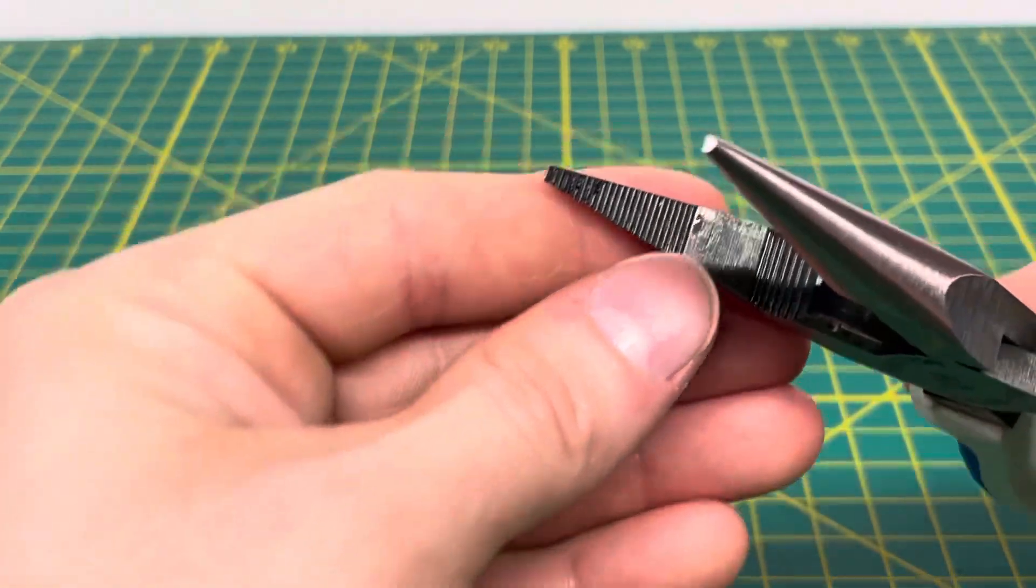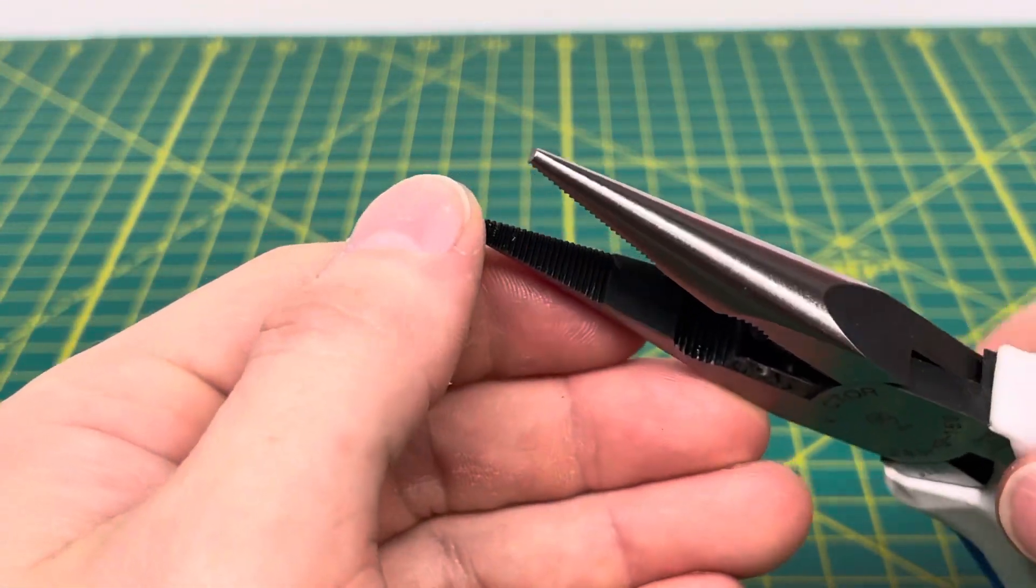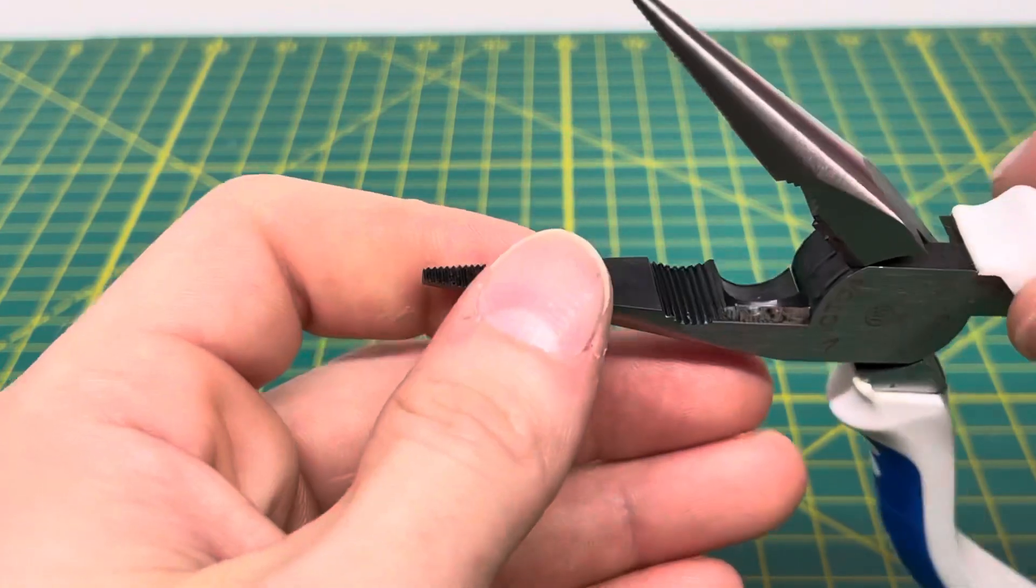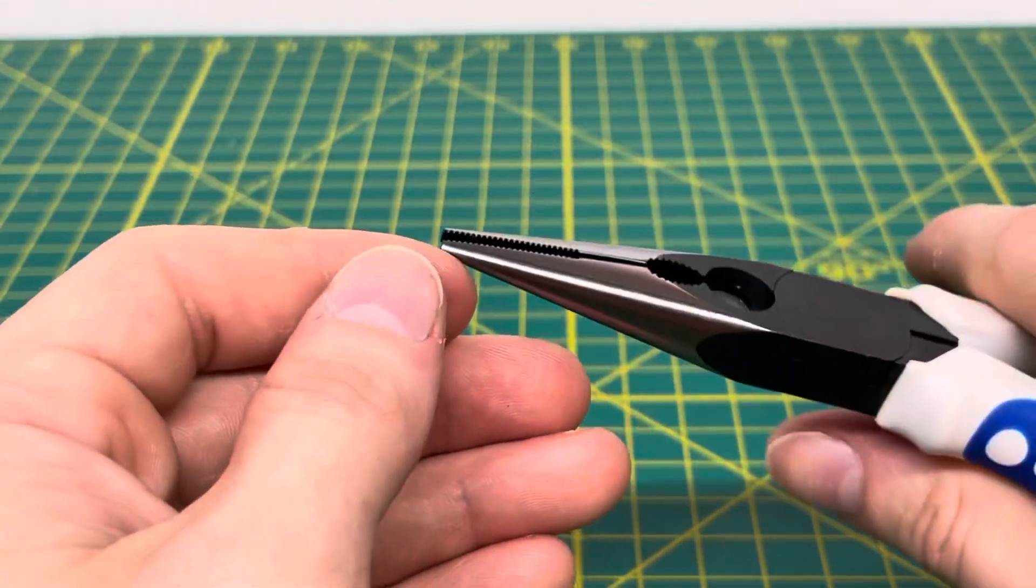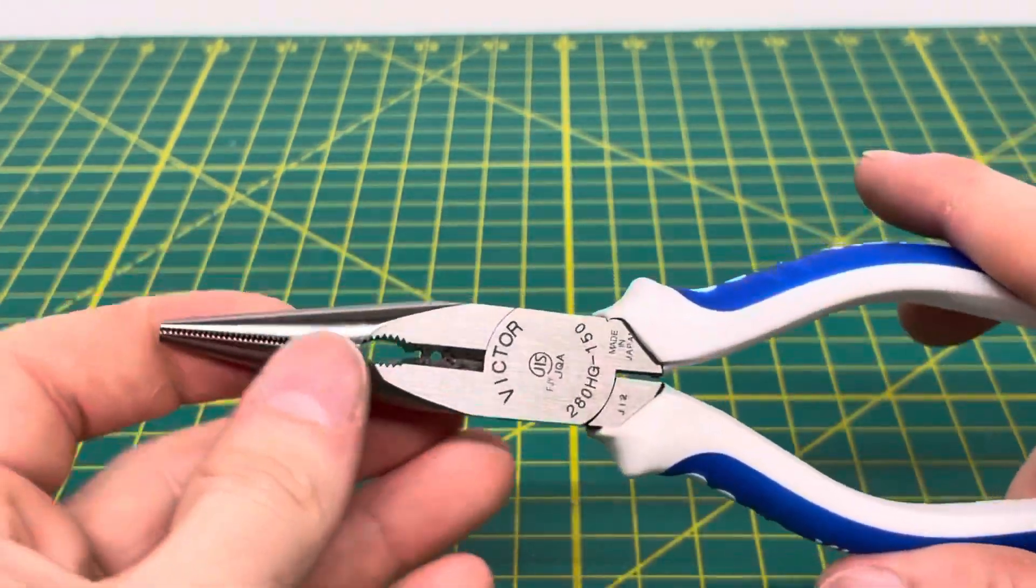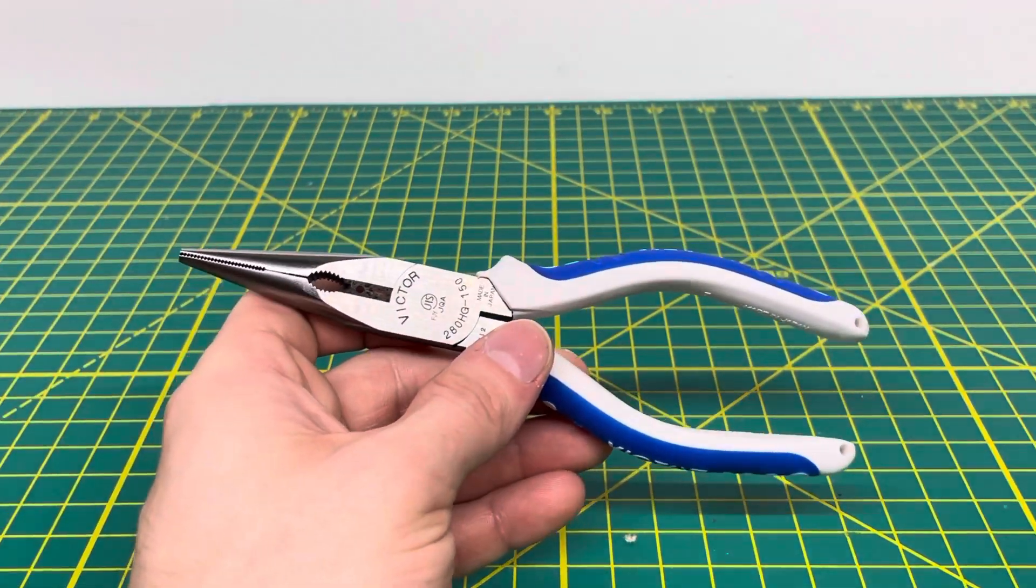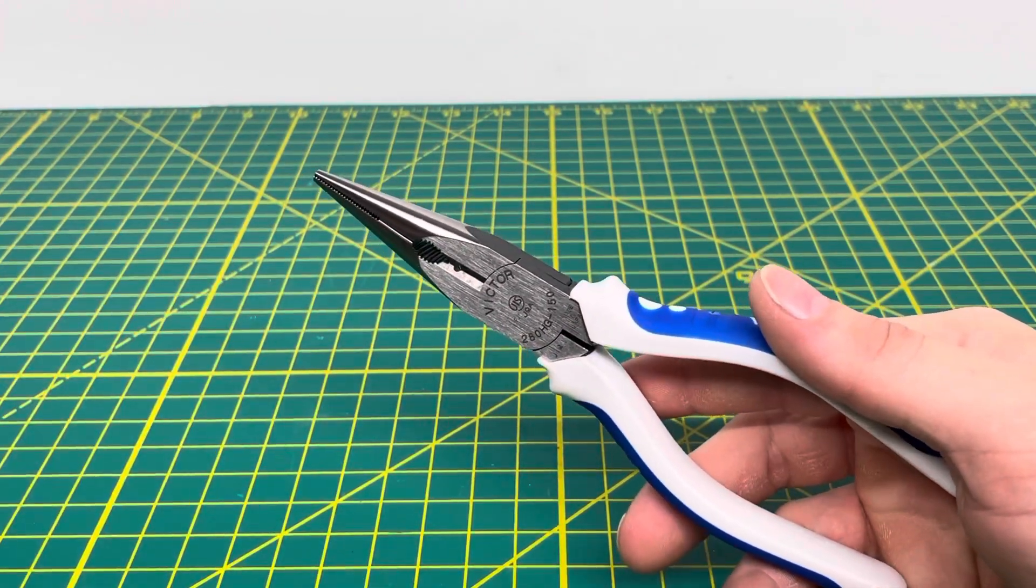And then coming to the nose of the plier, you can see you have some nice serrated teeth on the nose of the plier on both ends of the plier. So if you needed to grip down onto something, grip down on a wire and bend it, you're going to be able to do that no problem whatsoever. So now we'll go ahead and zoom out there and we'll get to some of the functionality of this tool.